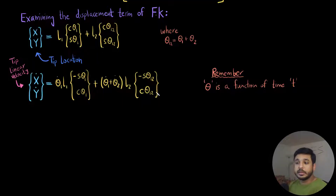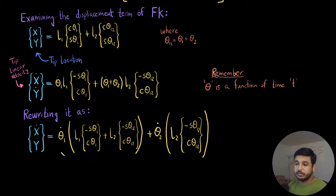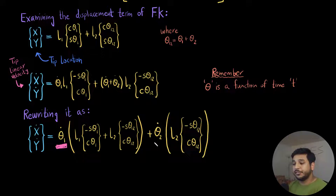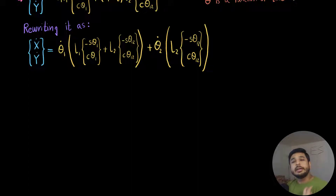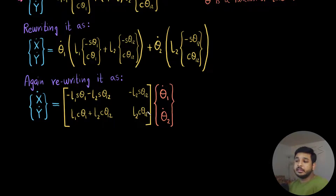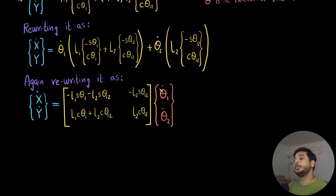I rewrite it another way — factoring out theta1_dot, making a bracket with everything multiplied by it, then factoring out theta2_dot and making a bracket with everything multiplied by theta2_dot. So I get these two big brackets: one for theta1_dot and the other for theta2_dot. Rewriting this again, I extract theta1_dot and theta2_dot and form a 2x2 matrix being multiplied by them. On the left-hand side I have the tip linear velocities.